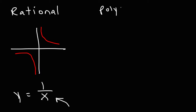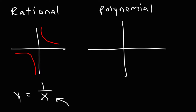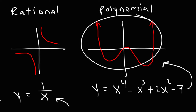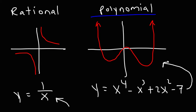And then there are polynomial functions — functions with many terms. The shape of a polynomial function can vary. An example would be y equals x to the fourth minus x cubed plus 2x squared minus 7. Keep in mind that specific equation doesn't represent that particular graph — it's just an example of a polynomial function.